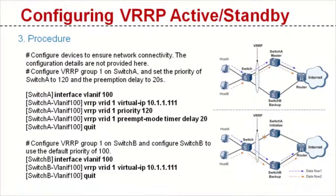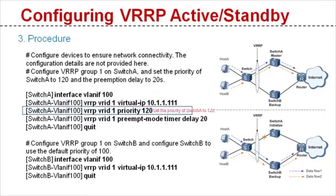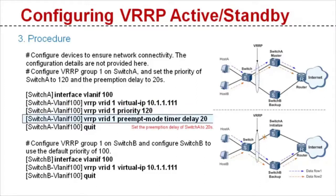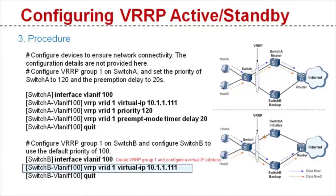Let's see the configuration procedure for VRRP. Before configuring VRRP, configure devices to ensure network connectivity. The configuration procedure is not provided here. Configure VRRP group 1 and a virtual IP address on switch A. Set the priority for switch A in VRRP group 1 to 120. Set the preemption delay of switch A to 20 seconds. Configure VRRP group 1 and a virtual IP address on switch B.